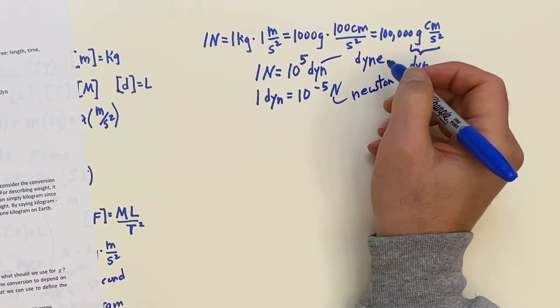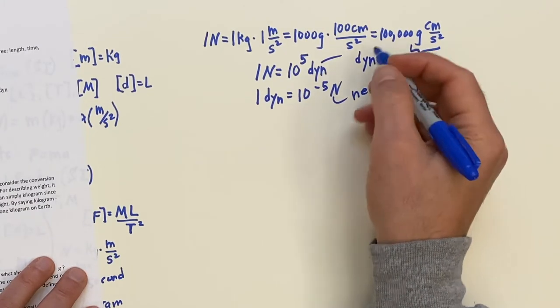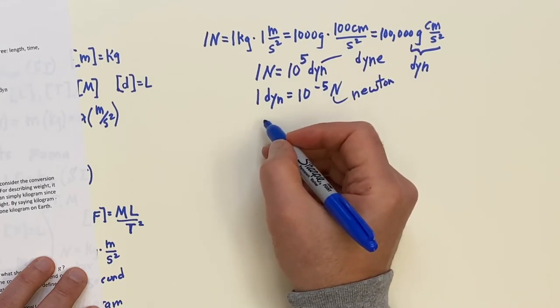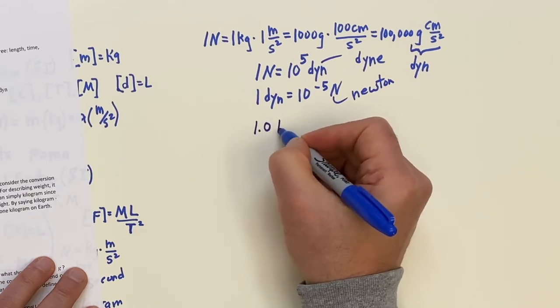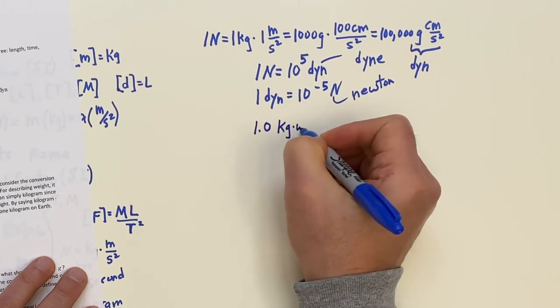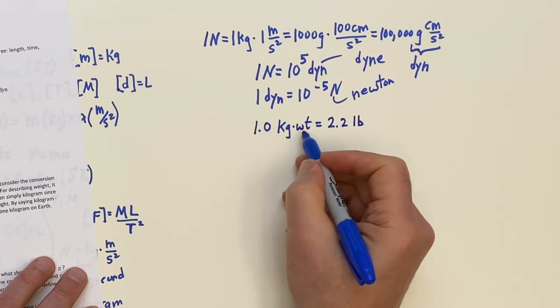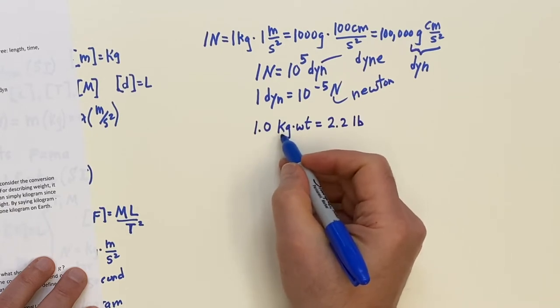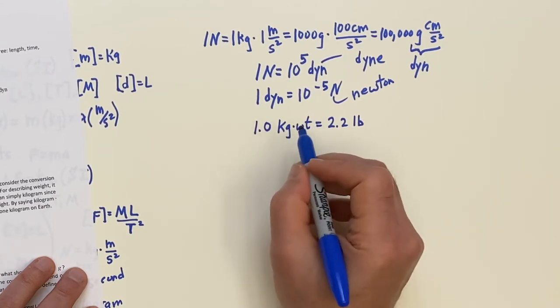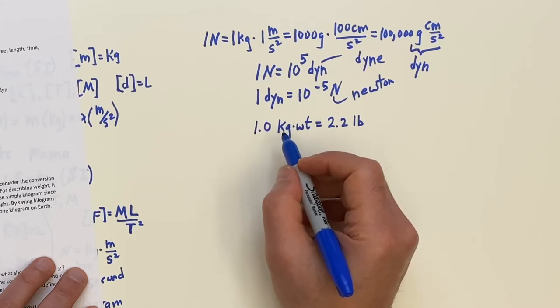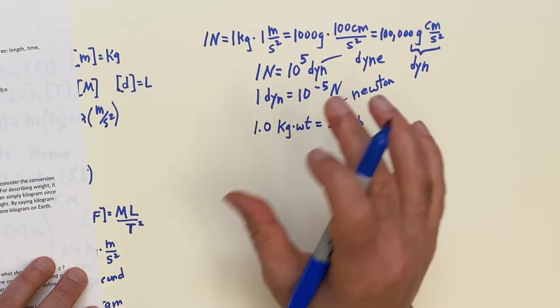So here, the gram centimeter per second squared is the dyne. So we got it. One Newton is equal to 100,000 or 10 to the fifth dynes. And you want to write the conversion going the other way. One dyne is 10 to the minus fifth Newtons. And you can spell these out if you want. D-Y-N-E. And then here, Newton.